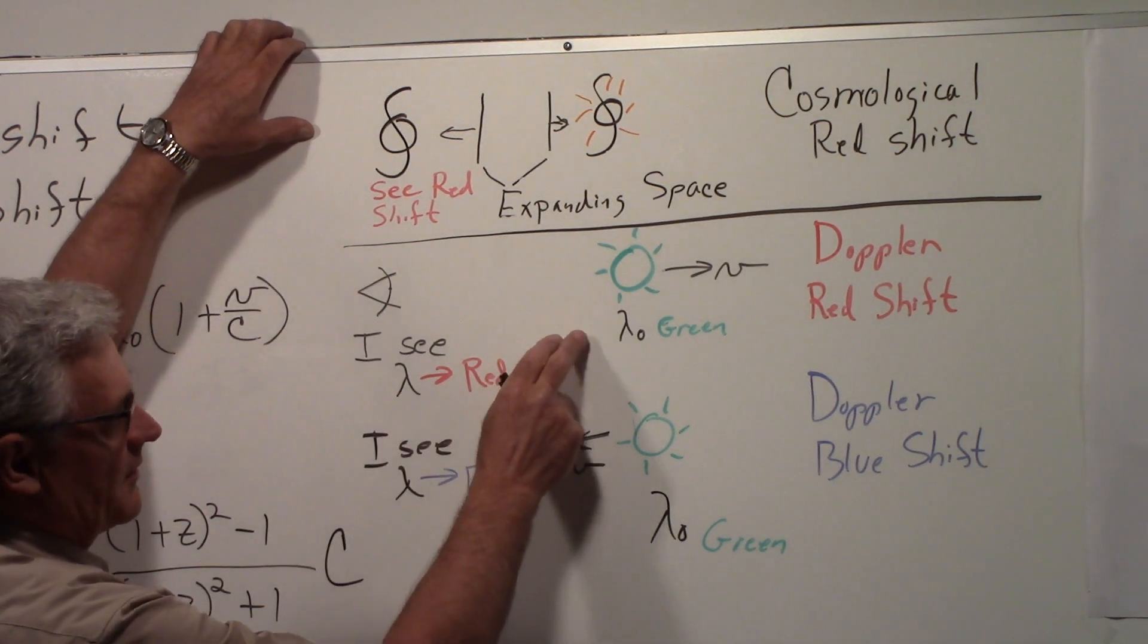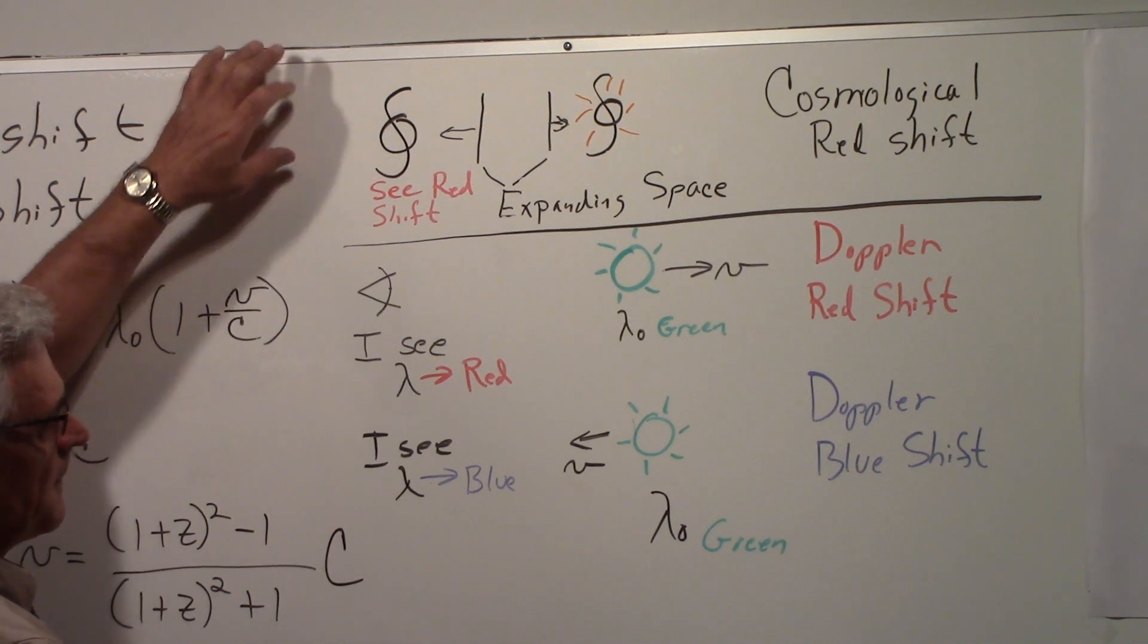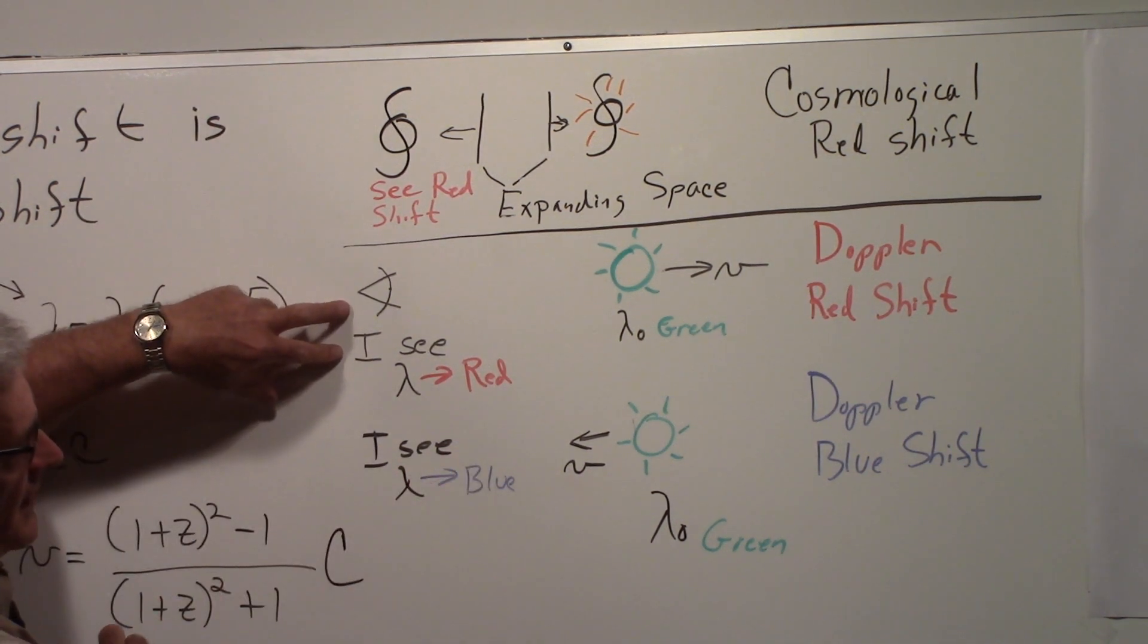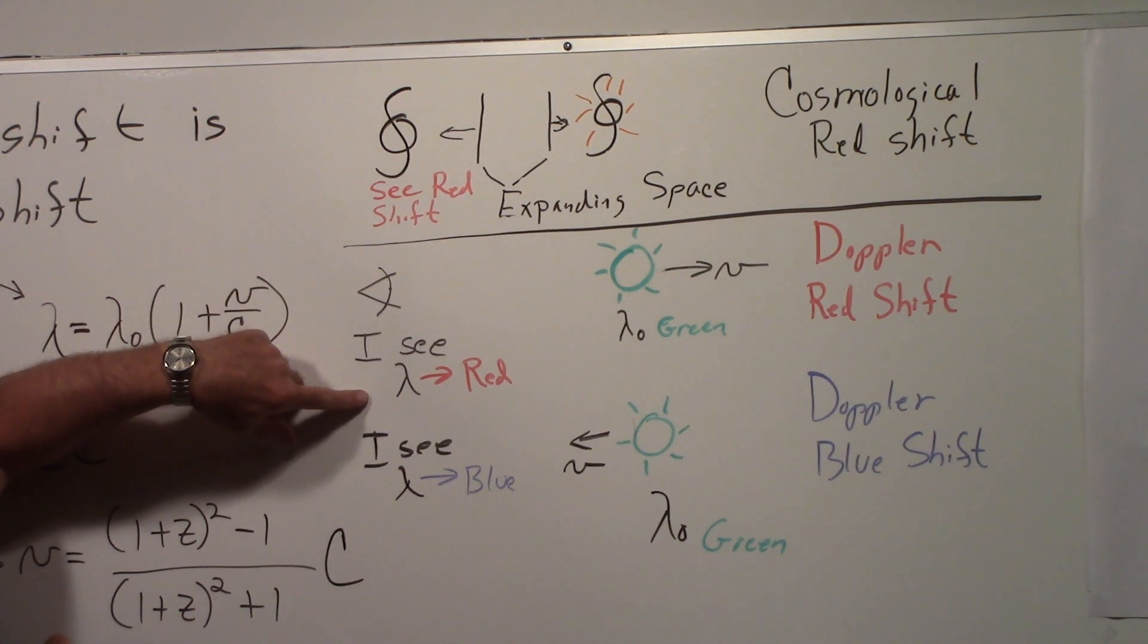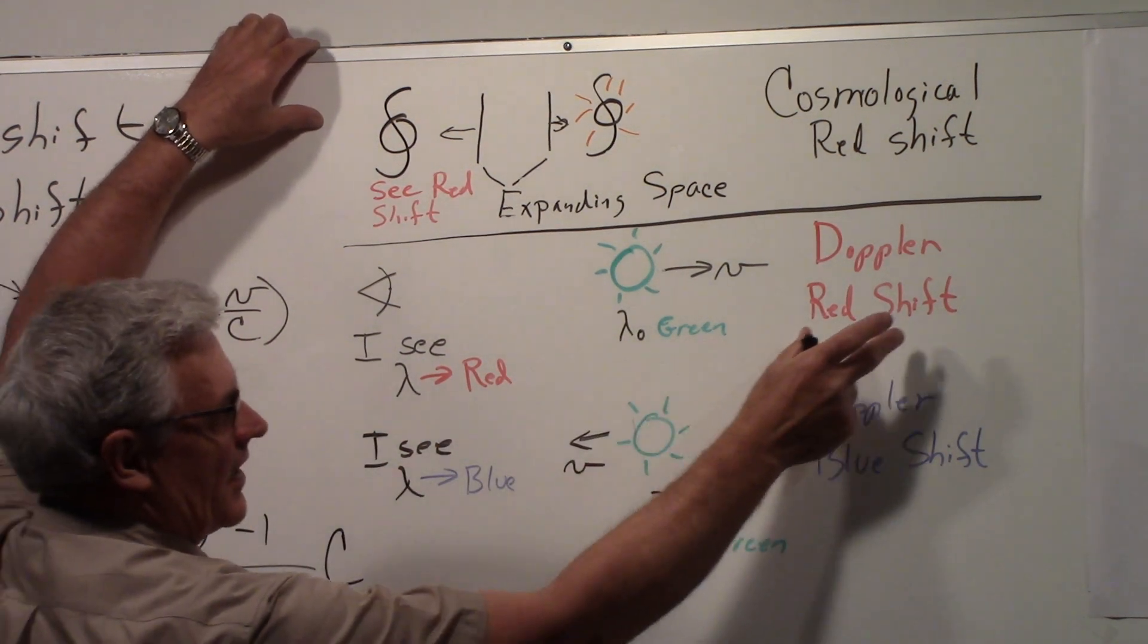Now right down here on Earth, let's say I'm looking at something that's moving away from me and it's emitting green light. It's moving away, the wavelength gets stretched, I see a red light instead of green if it's moving fast enough.